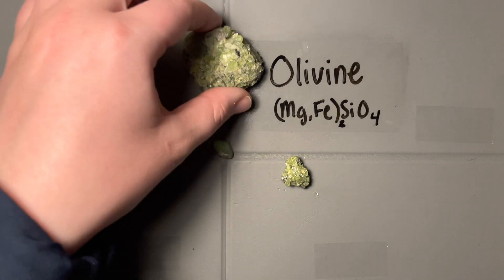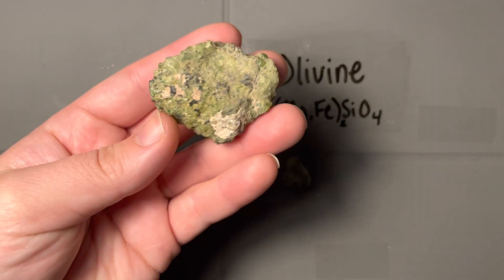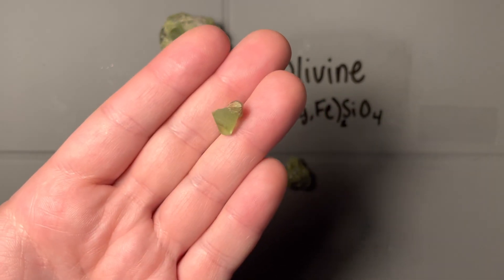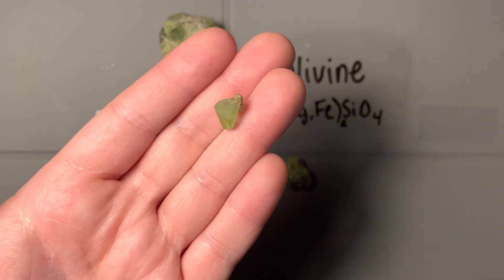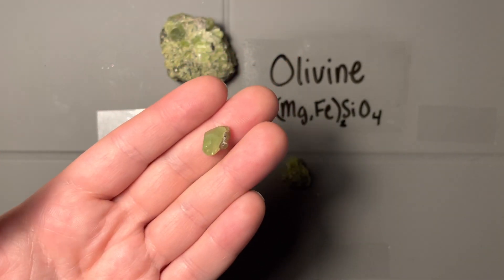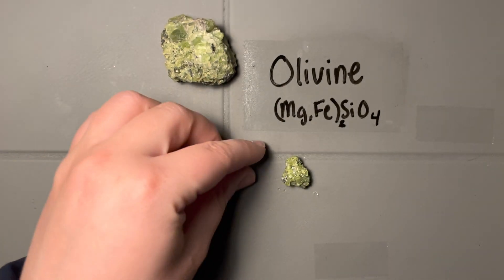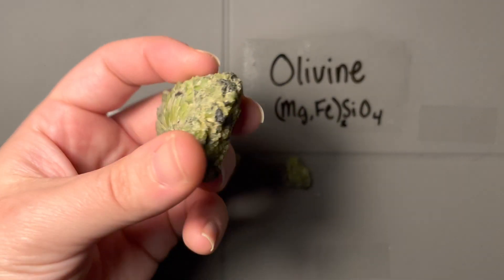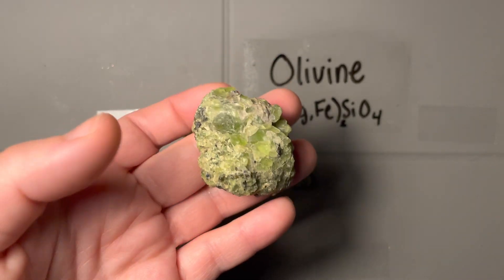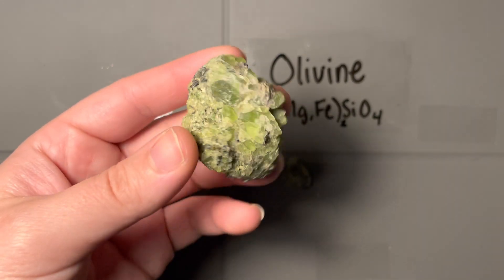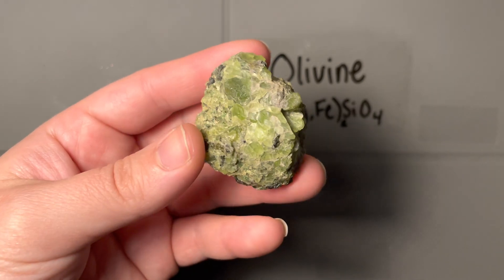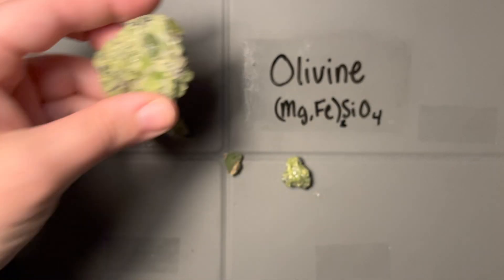Density can be really difficult to tell for this one, because if I hold a crystal this size in my hand, it's difficult to gauge its density compared to something else. But in general, when I hold one of these xenoliths, it's certainly not light, but it's not very dense either — I would say moderate to low-moderate density.